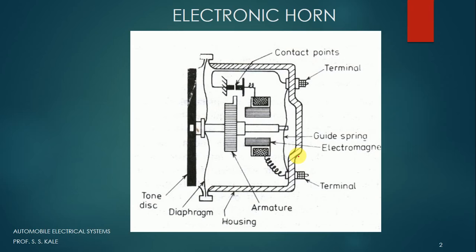The first component which we are going to see is the electric horn. It's quite interesting to know how an electric horn works. We know that when we press a button, a noise or sound is created from the electric horn. But how this particular sound is created, that we are going to see. This is the schematic diagram of the electric horn. We have to understand first the construction and then we will go to the working. Let's consider various components used in this particular case.